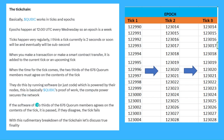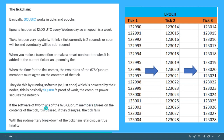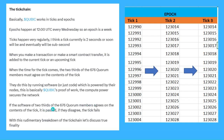If the code of two thirds of the 676 core members agrees on the contents of the tick, it is passed. If they disagree, the tick fails. So each core member's code looks through the contents of the tick and says, 'I think these are the contents.' If two thirds of that 676 agree, the tick passes and is added to the chain. If only 50% agree, the tick fails.